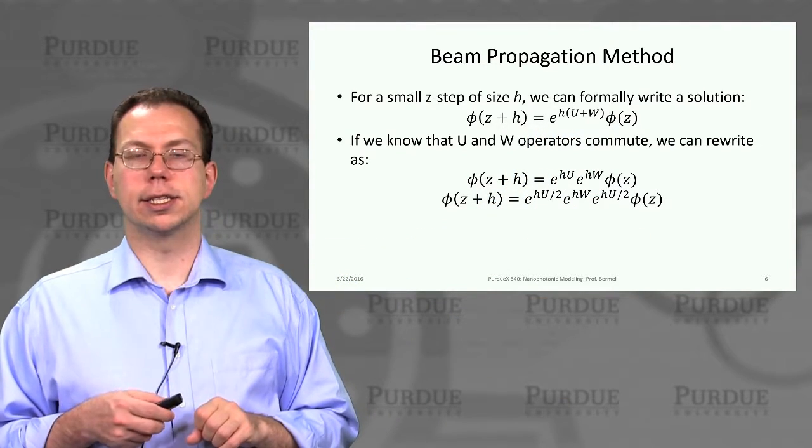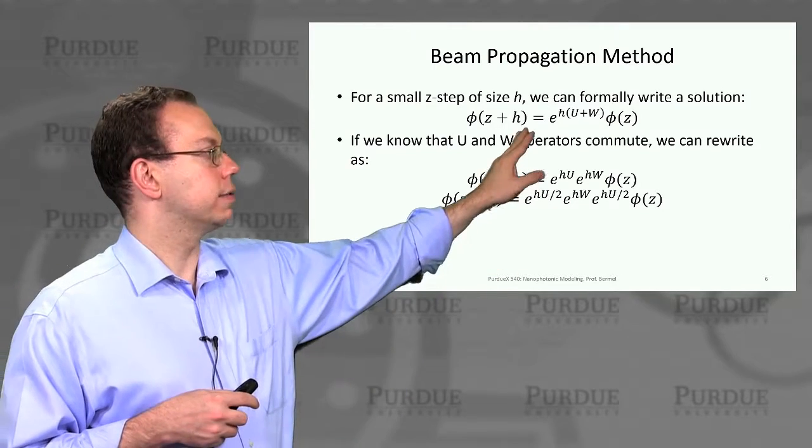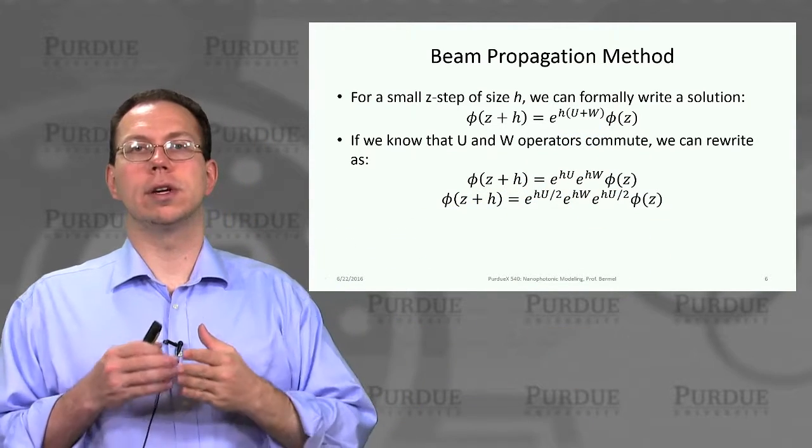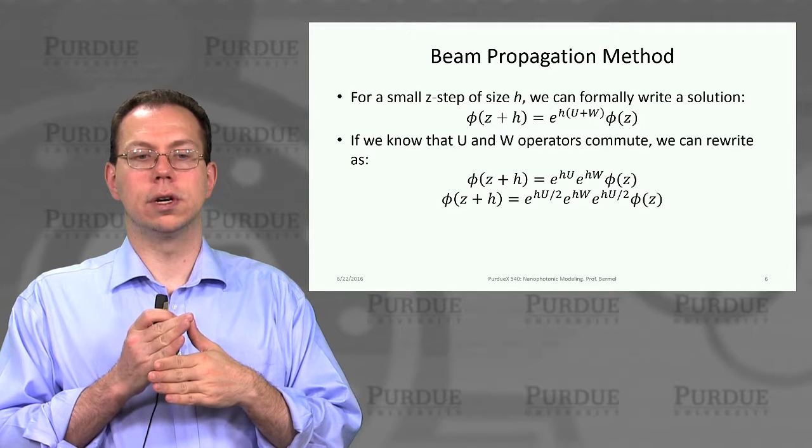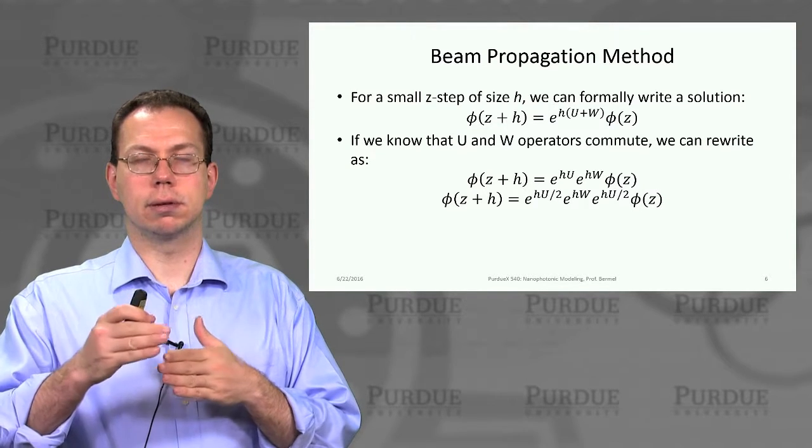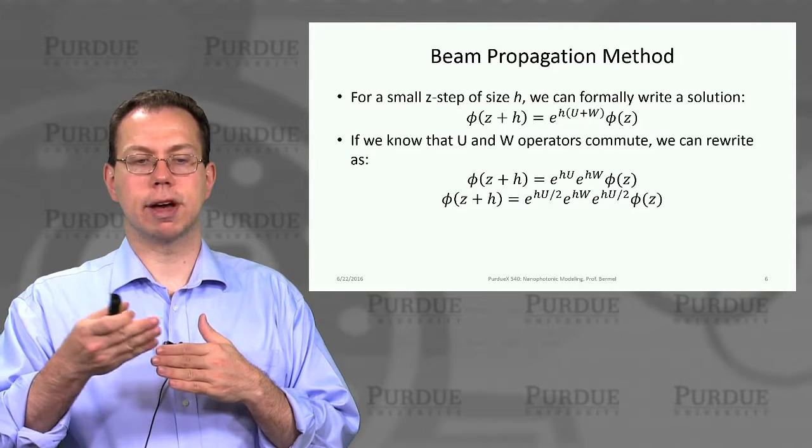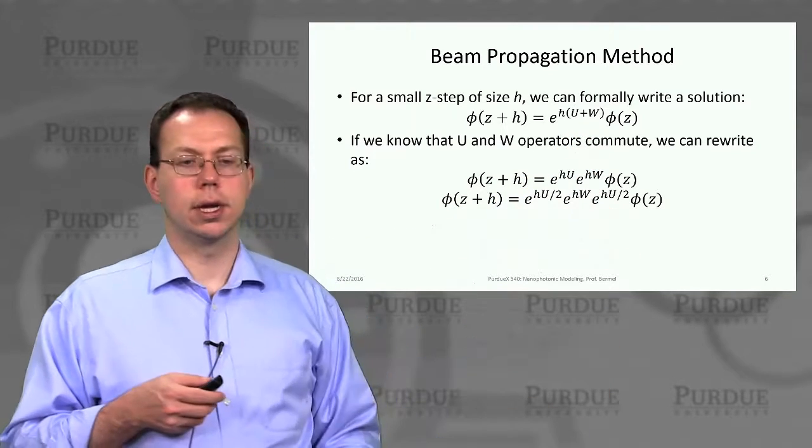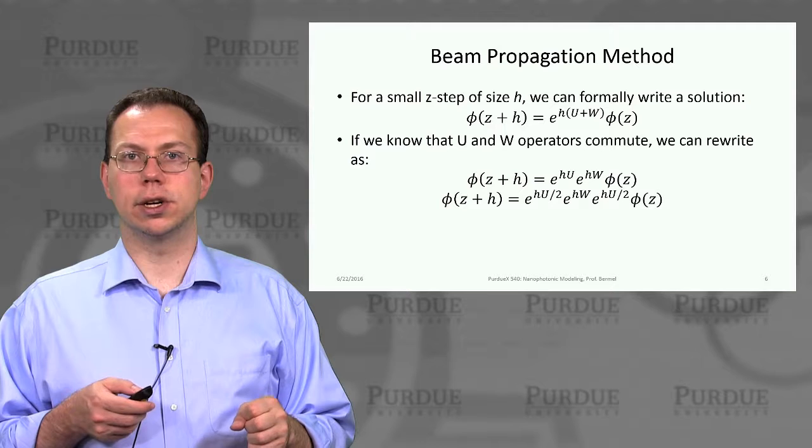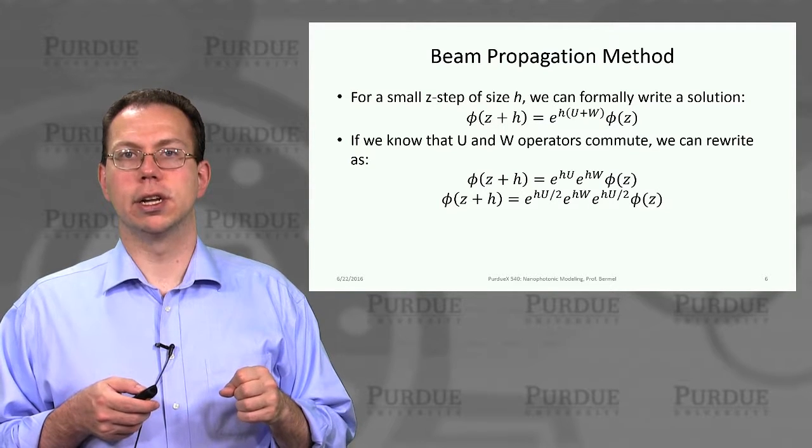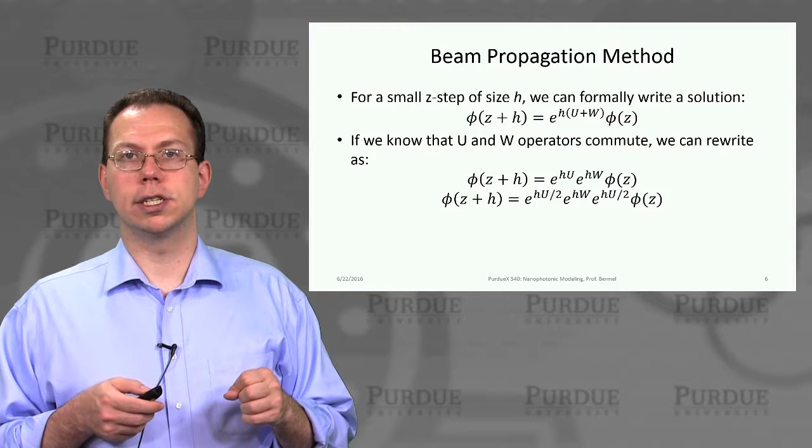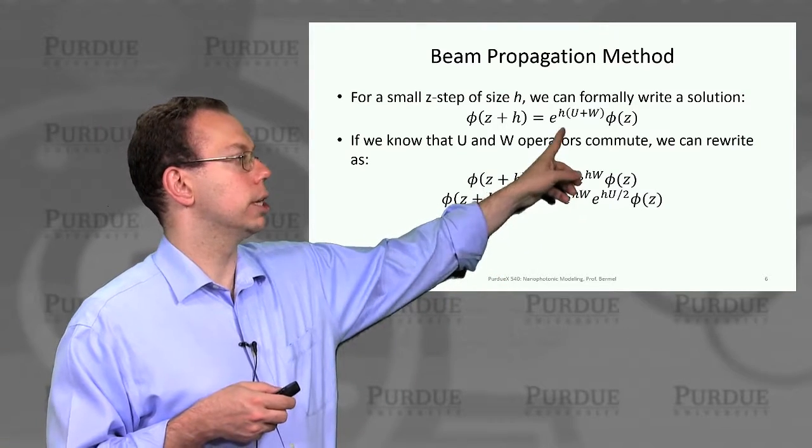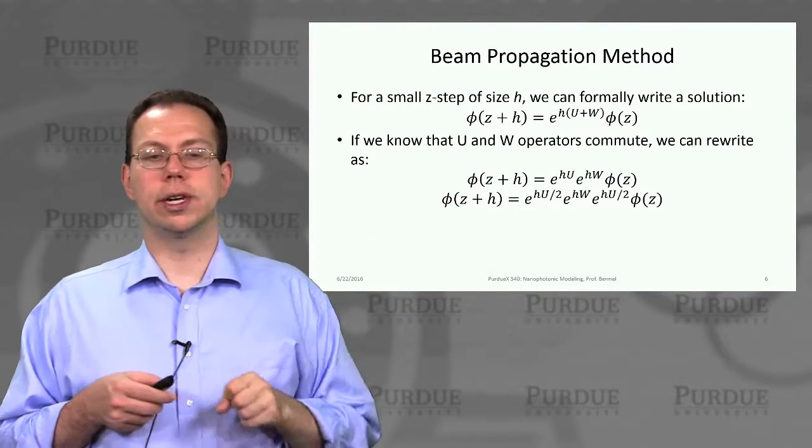Phi of z plus h equals e to the h times U plus W times phi of z. You can see it's acting to provide this extra set of operators. You can expand it as 1 plus h times U plus W. You can go back to the difference equation and show that's a very good approximation when delta z, which is now h, is very small. Going back to this exponential term, which is more general,